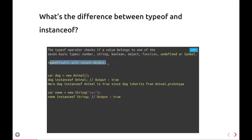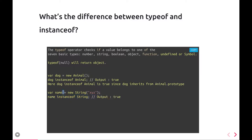Another operator is instanceof. instanceof is used to check if something is an instance of a particular type. So I created a name variable which is actually a string object, then I check name instanceof String — it will give me true because name is an object of String. Similarly, dog instanceof Animal: I'm creating a dog object from the new Animal function, so obviously dog will be instanceof Animal.